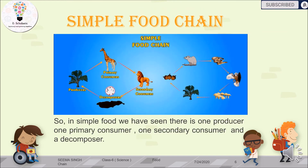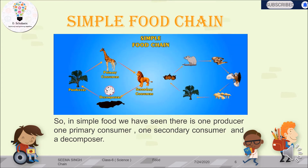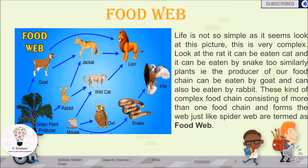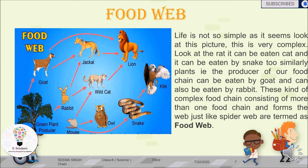We have seen a simple food chain with one producer, one primary consumer, one secondary consumer, and a decomposer. But are all the food chains running in our ecosystem this simple? In reality, multiple food chains run at the same time. Looking at a figure showing multiple active food chains, this complex construction of interconnected food chains is called a food web.